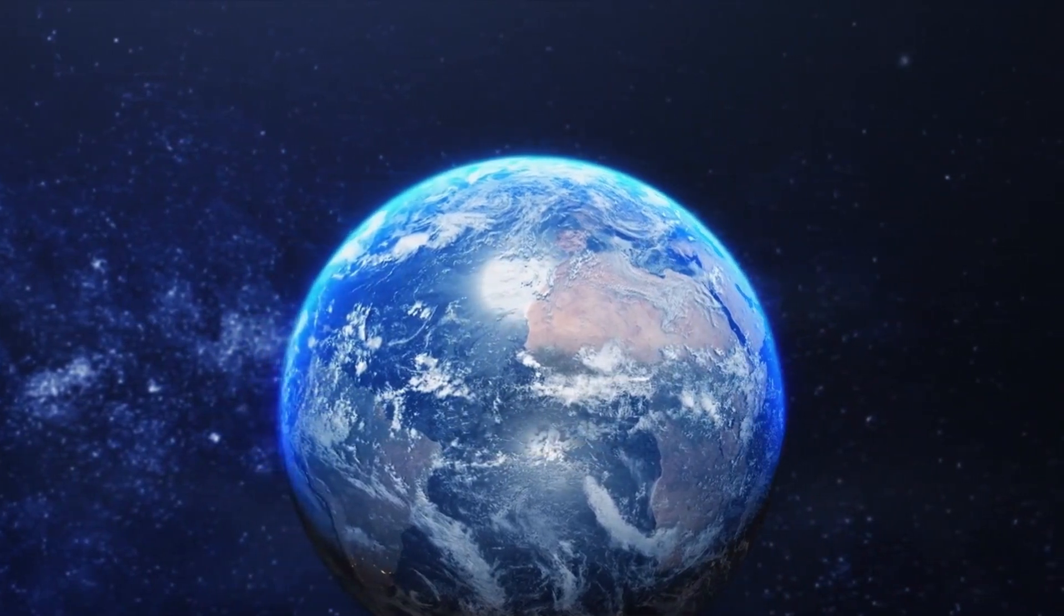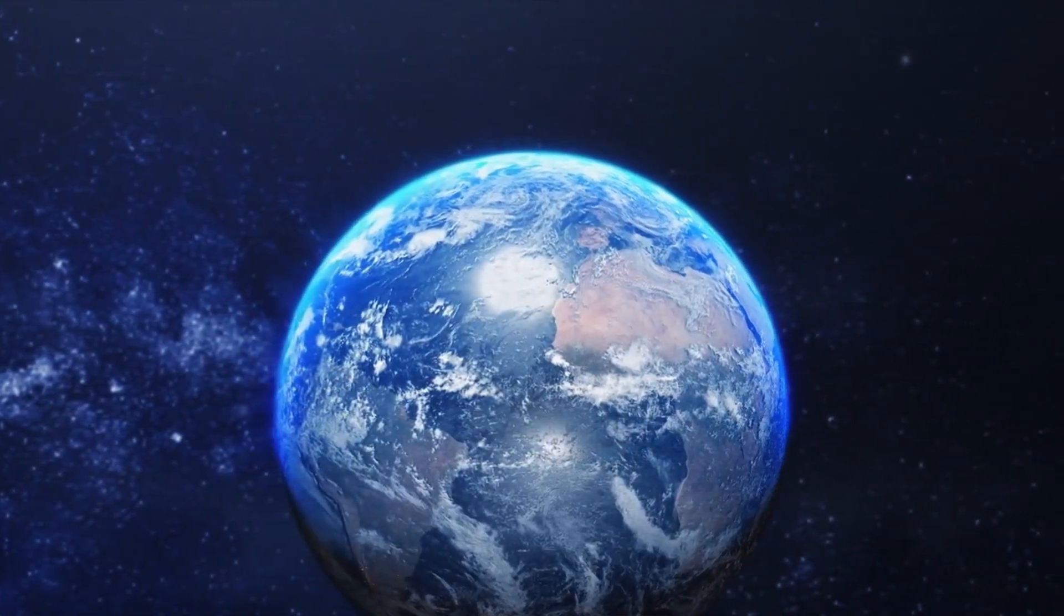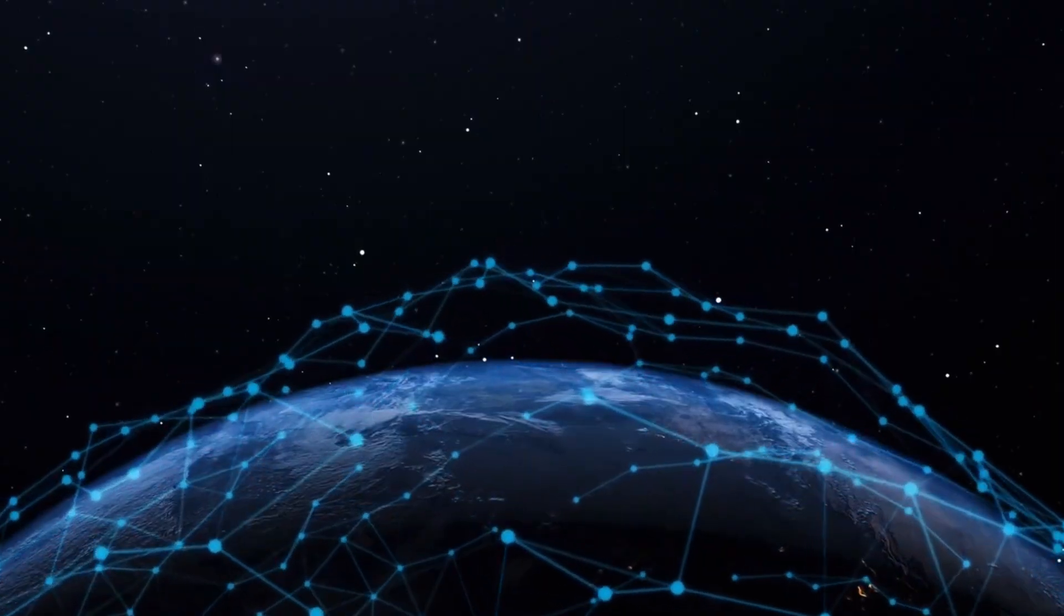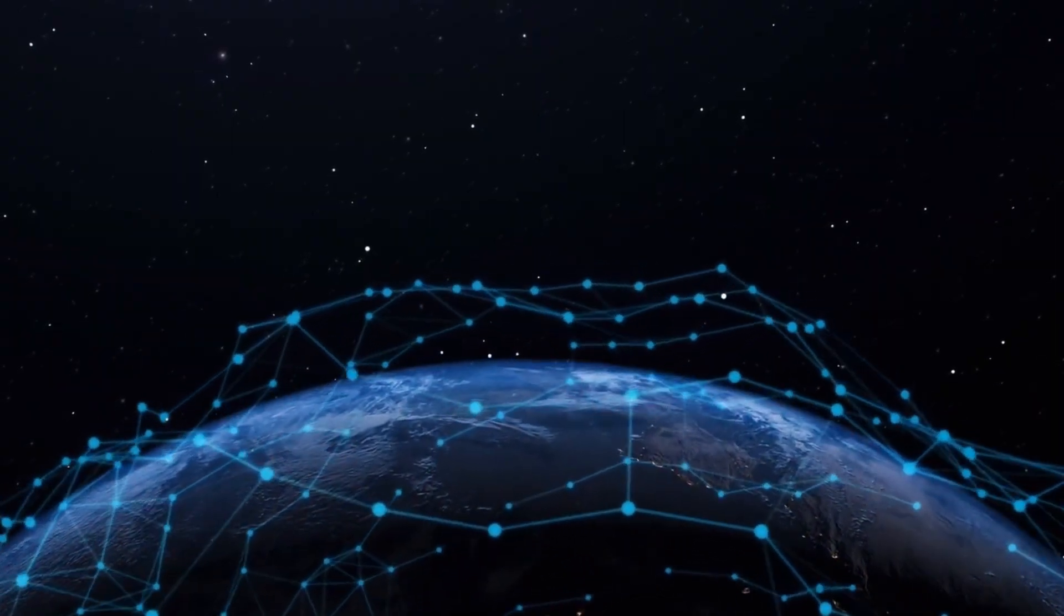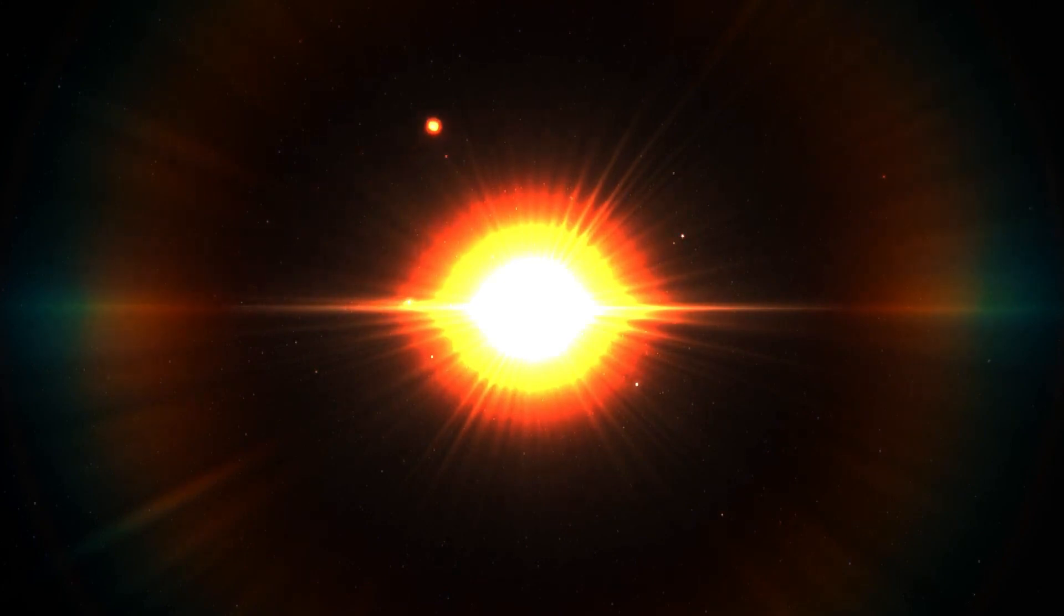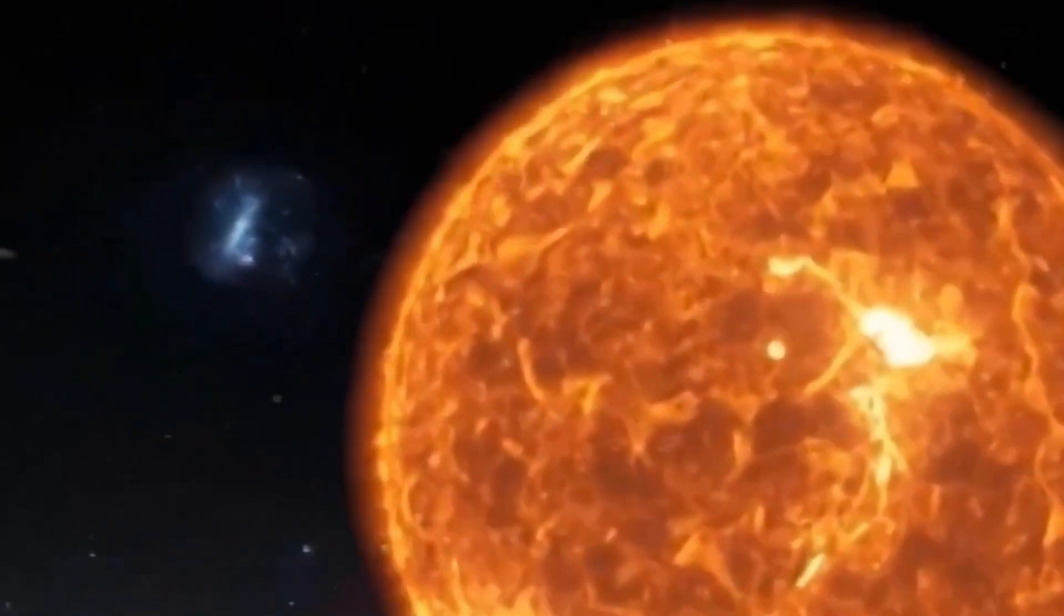Since the Great Dimming, Betelgeuse has exhibited altered behavior in terms of its light and radial velocity. Despite its unpredictable behavior, Betelgeuse remains a massive red supergiant star undergoing the final stages of rapid evolution. When it exhausts its fuel, the core will collapse under its enormous mass, resulting in a supernova explosion that could outshine entire galaxies.